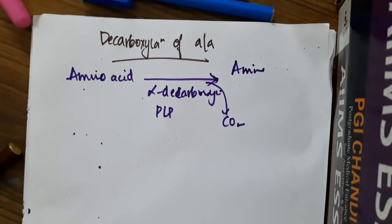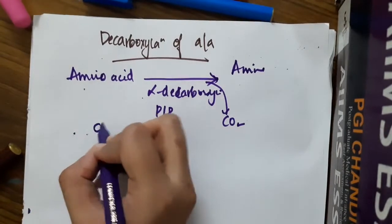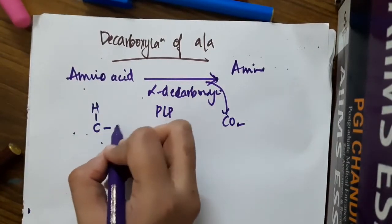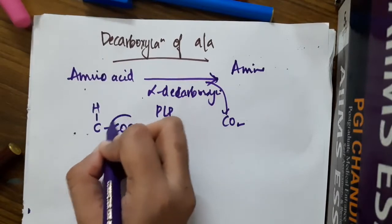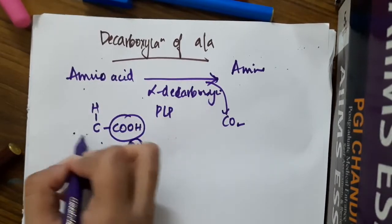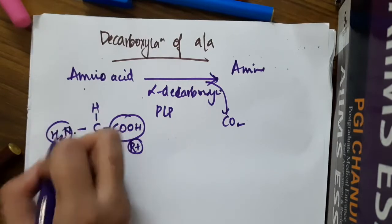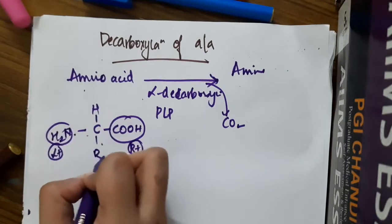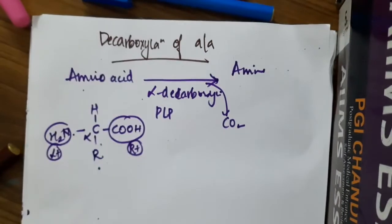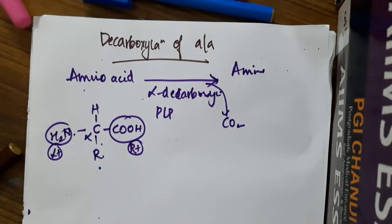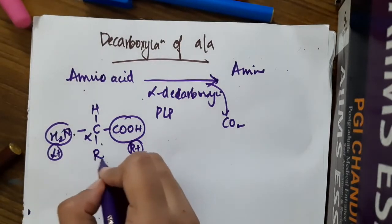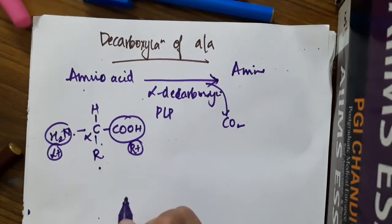The general structure of an amino acid is COOH where this carboxyl group is on the right side and we have amine group on the left side and the alpha carbon has an aliphatic or aromatic chain which is attached to it.